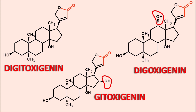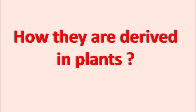By 12-hydroxylation it gives the Digoxigenin, and 16-hydroxylation gives the Gitoxigenin. Digoxigenin is one of the aglycones present in Digoxin, which has high therapeutic activity and is mainly used as a cardiac glycoside. Today in this video let us see how these three aglycones are derived within the plants and the different steps in their biosynthesis.